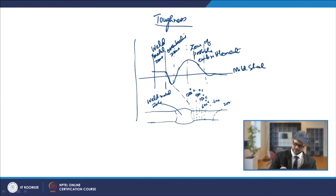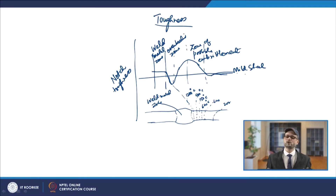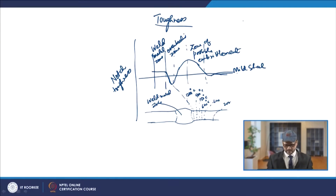After the embrittlement zone, toughness comes to a constant value for mild steel. But if you talk about high strength low alloy steels — HSLA steels — where grain refinement is occurring, in those cases there is an increase in toughness in this region, rather than remaining at a constant value.